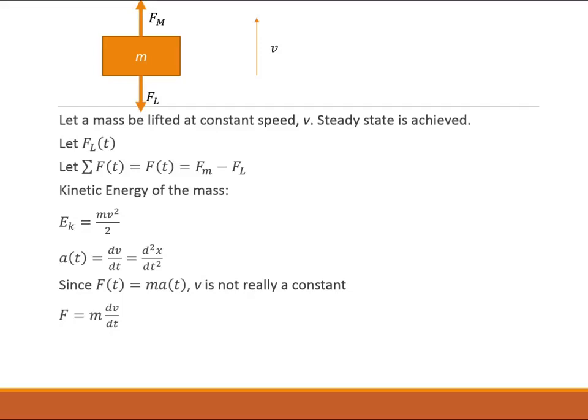Suppose I take F is equal to ma and I write a as dv/dt and let's just say for some reason I know it's a good idea to multiply by dx over dx. Well now by rearranging my numerators I see that I have dx/dt and dv/dx. That's kind of nice because that means I have mv dv/dx. Now if I multiply both sides of the equation by dx, I have a separated differential equation.